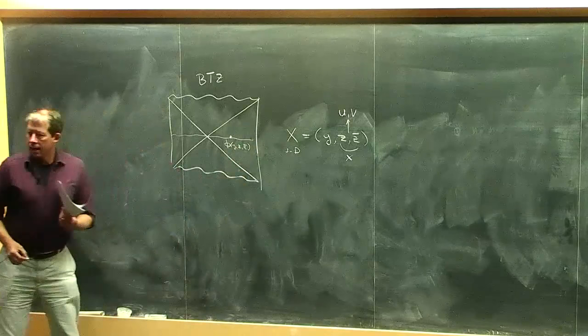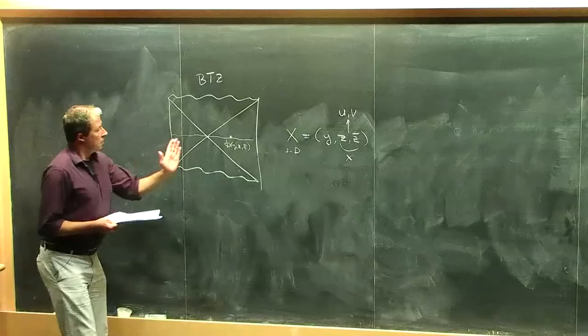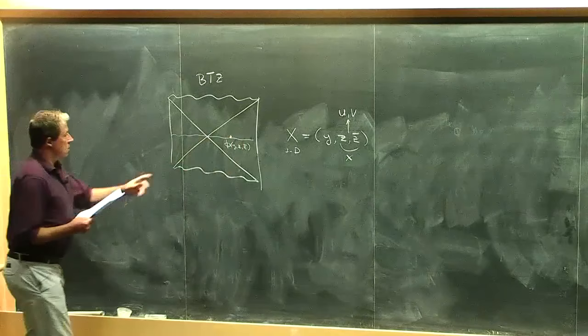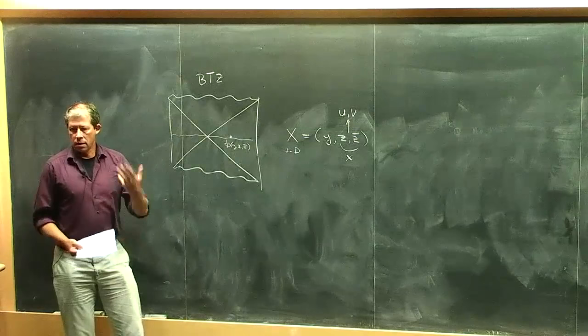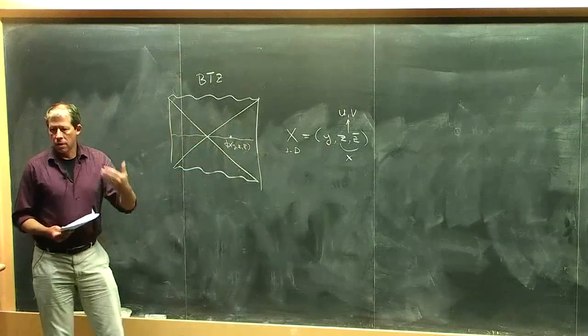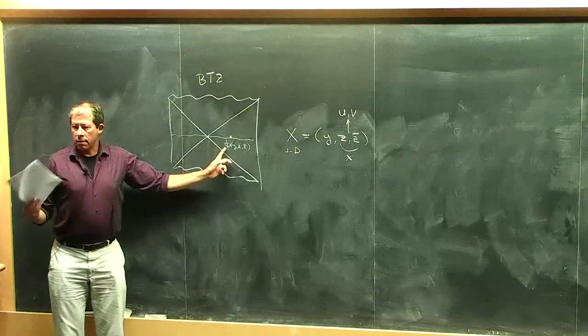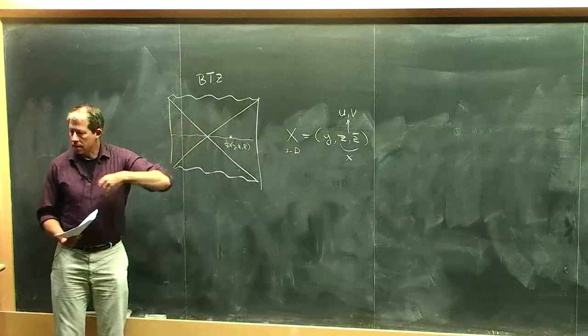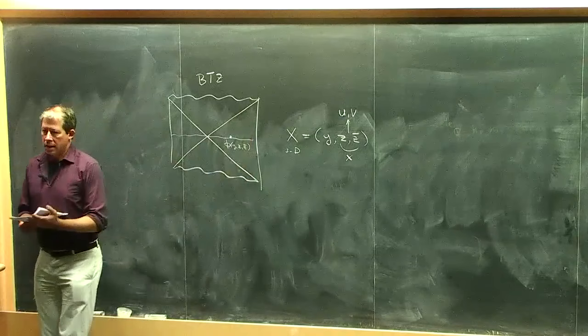ADS-CFT gives answers to on-shell questions, where you integrate out the bulk with certain boundary conditions at infinity. The correlation functions at the boundary are equivalent to S-matrix quantities. Being able to create an object in the bulk where a particle doesn't exist and then the phi field introduces a particle — that's a different notion than the ones we study just sitting at the boundary.